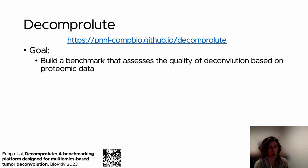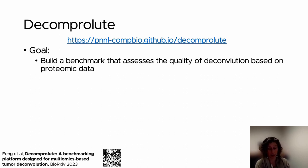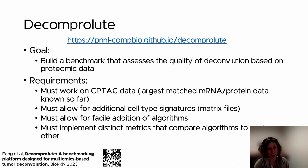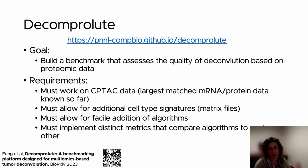Decomprolute was built to be a computational benchmark to assess the quality of algorithmic deconvolution methods based on proteomic data, getting around the need for a gold standard by developing other metrics in its place. The requirements were: to leverage CPTAC data, since profiling all these patients is an excellent use case for building better algorithms; to allow for different and varying cell type signature matrices — CyberSort released 22 cell types, but others have profiled specific subpopulations of tumors, and we wanted to use those signature matrices as well.